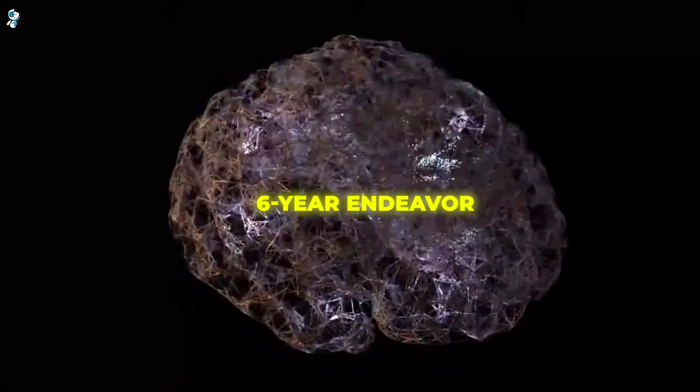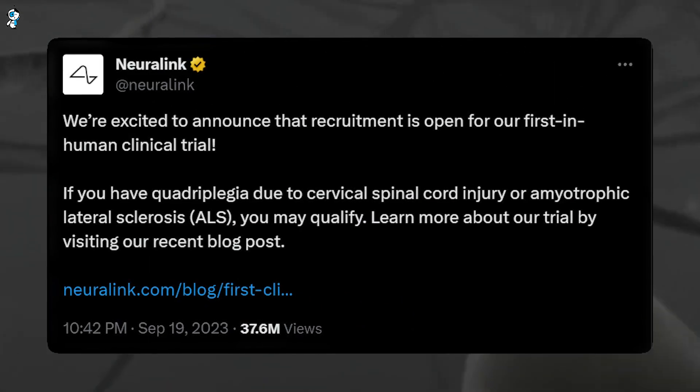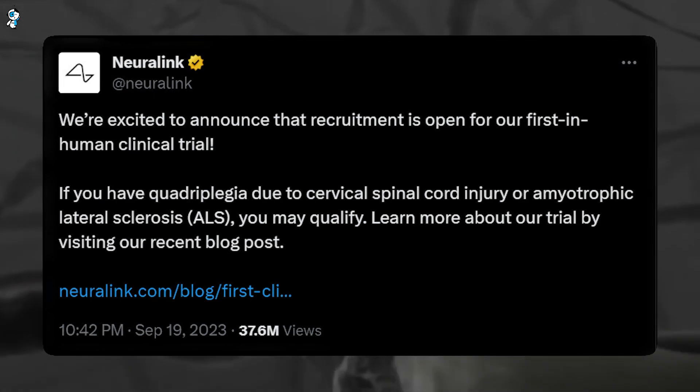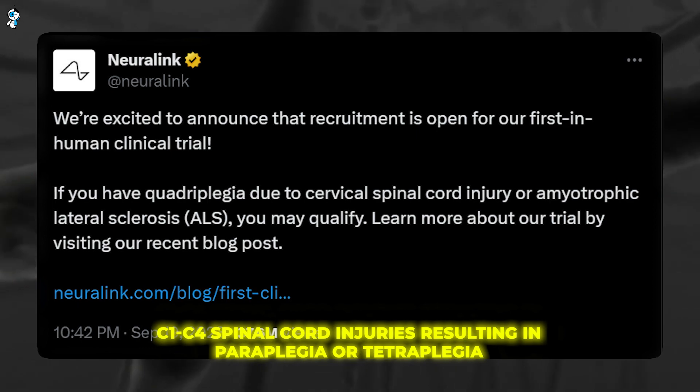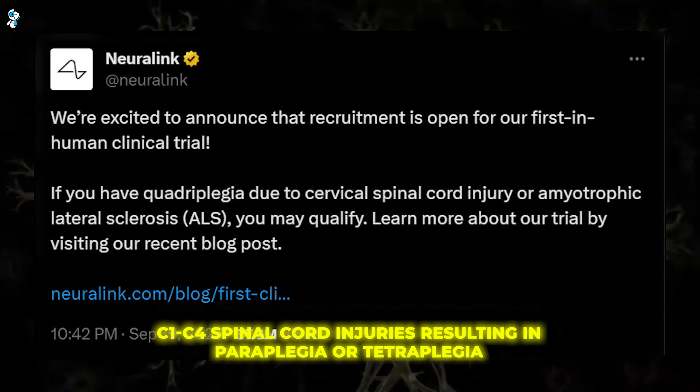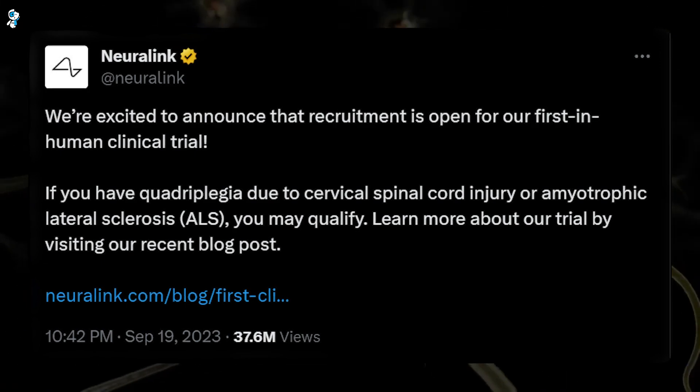Clearly, this technology still has much to prove. For their first human guinea pigs, Neuralink is targeting an exclusive group. They are specifically recruiting patients with C1-C4 spinal cord injuries resulting in paraplegia or tetraplegia. Also sought are those with advanced ALS causing complete loss of movement.